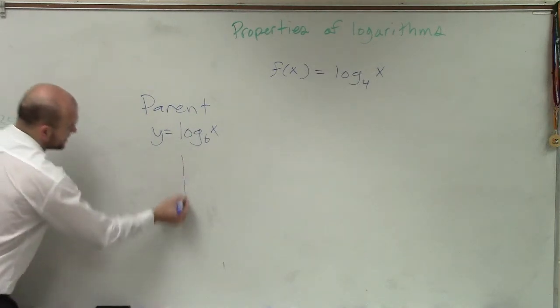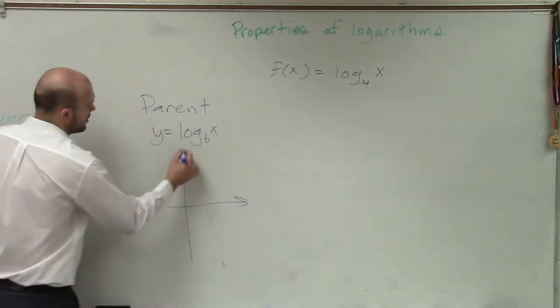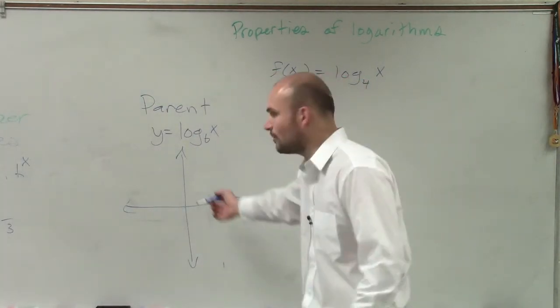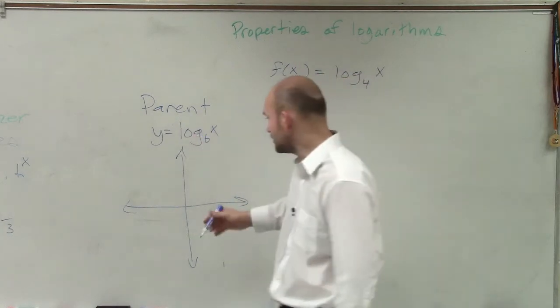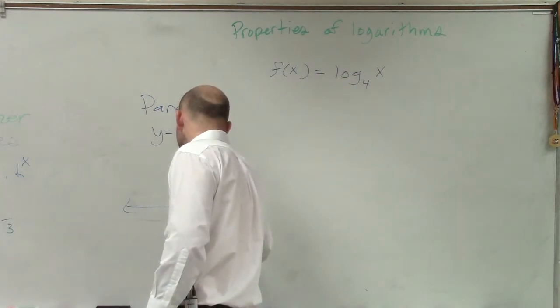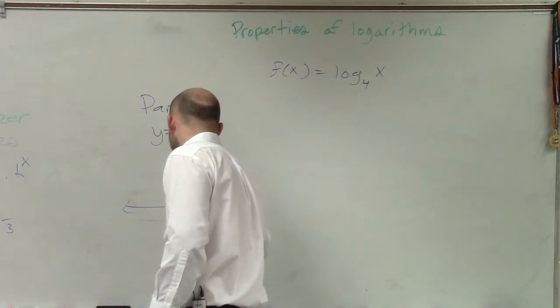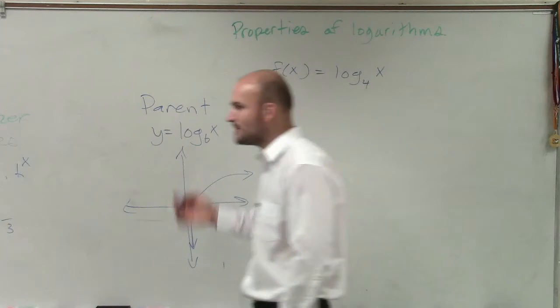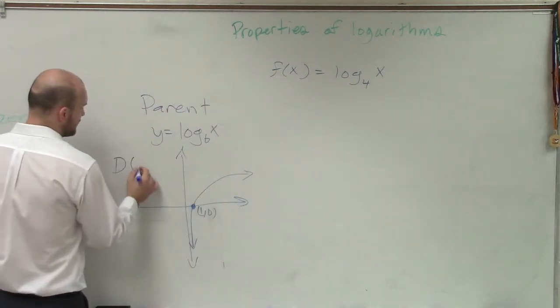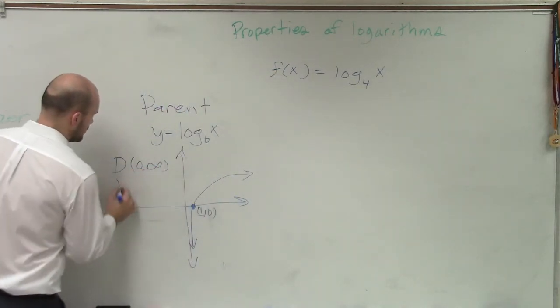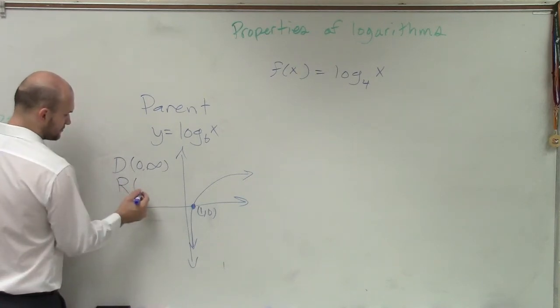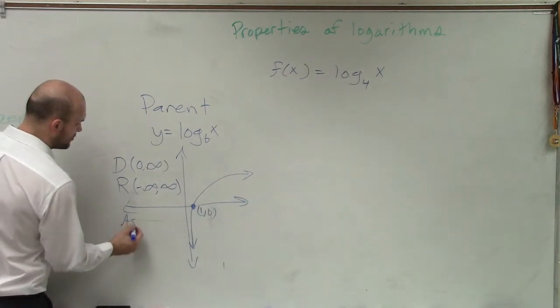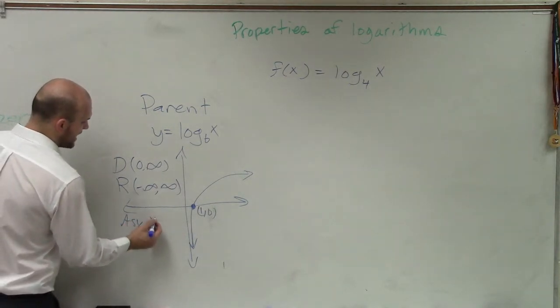So if I was going to take a look at this and say, what does the parent graph look like? I kind of remember Mr. McLogan. He was flipping it over that x equals y line. And instead of the y-intercept being at 1 comma 0, there was no y-intercept. And now we had an x-intercept at 1 comma 0. It looks something like that. And just from that parent graph, you guys should know that the domain is now from 0 to infinity. The range is from negative infinity to infinity. And the asymptote is at x equals 0.